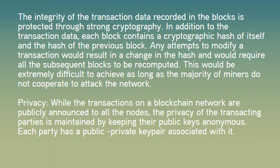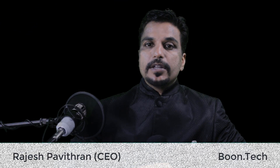Privacy: while the transactions on a blockchain network are publicly announced to all the nodes, the privacy of the transacting parties is maintained by keeping their public keys anonymous. Each party has a public-private key pair associated with it. The account address is derived from the public key.